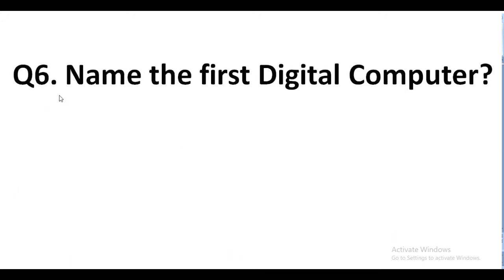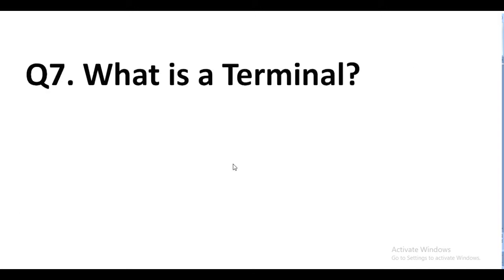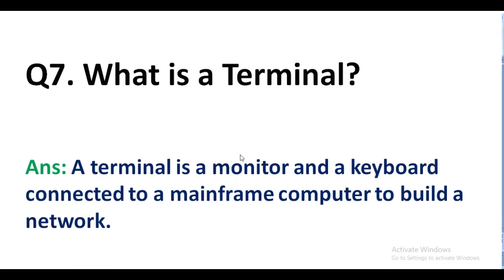Question number 6. Name the first digital computer. Answer. In the early 1940s, Aiken built the first general purpose digital computer called Mark 1. Question number 7. What is a terminal? Answer. A terminal is a monitor and a keyboard connected to a mainframe computer to build a network.